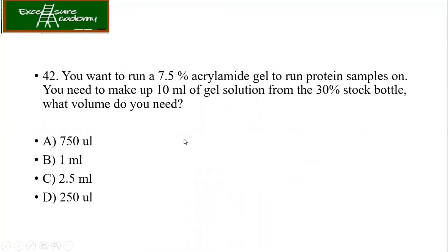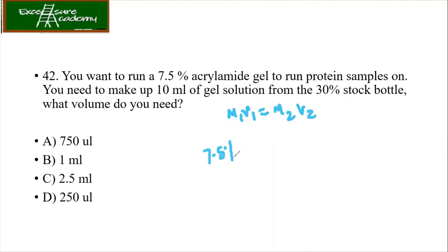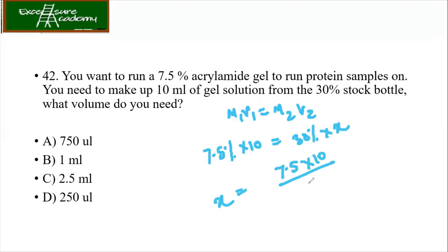You need to run a 7.5% acrylamide gel for protein samples. You need to make up 10 ml of gel solution from a 30% stock bottle — what volume do you need? The formula to use is M1V1 = M2V2. We need 7.5% and 10 ml, and the stock is 30% — so X equals 7.5 times 10 divided by 30, which gives 2.5. The answer is 2.5 ml.